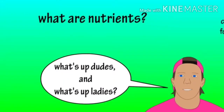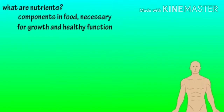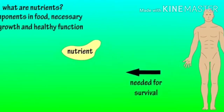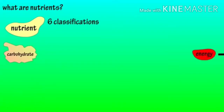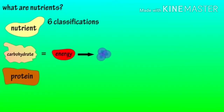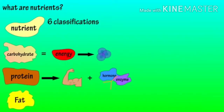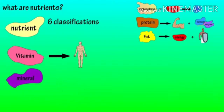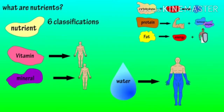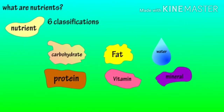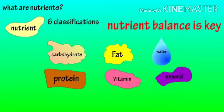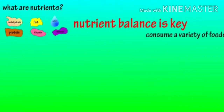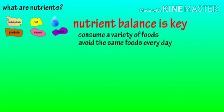Nutrients are components in food that the body needs to grow and maintain healthy function. Basically, the body needs nutrients to survive. There are six classifications of nutrients: carbohydrates, which are mainly energy for cellular function; proteins, whose primary function is to grow and maintain tissue and build other important chemicals in the body; fats, which provide energy and protection; vitamins, which contribute to important functions in the body; minerals, which also contribute to bodily functions; and water, which makes up about 60% of body weight. It's important to recognize that all six nutrients are important for healthy function, with nutrient balance being the key. A great strategy for finding nutrient balance is to eat a wide variety of foods and avoid eating the same foods every day.